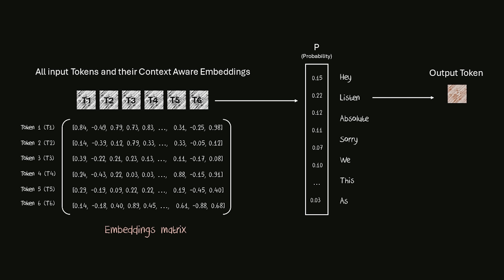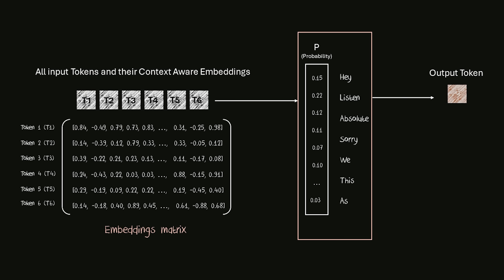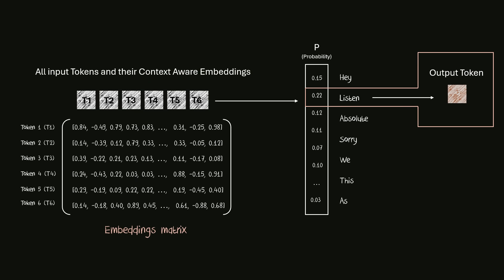In the previous step, all input tokens received a context-aware embedding. These embeddings are now placed in an embeddings matrix — each row of the matrix is the context-aware embedding of one token. Then, based on this embeddings matrix, the probabilities of the next output token are calculated. Based on the probability distribution, the next output token is chosen. If the temperature setting of the model is very low, the model will always pick the most likely token. As the temperature setting increases, it might go for less likely words, resulting in more creative and less repetitive answers. But if you set the temperature too high, this might result in gibberish. Also, every generation cycle only generates one token at a time based on the embeddings matrix of the input.